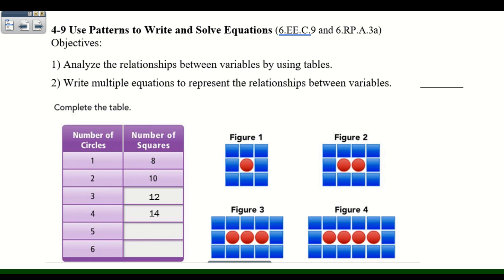With five circles, we need to figure out the relationship between circles and squares. Basically, every time we add a circle, we have to add two squares — one on the top and one on the bottom of the circle to complete the figure. So the next number is 16, and adding another circle gives us 18.